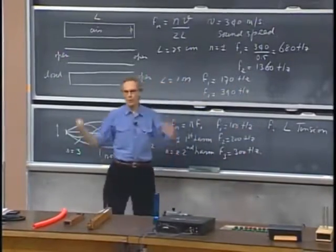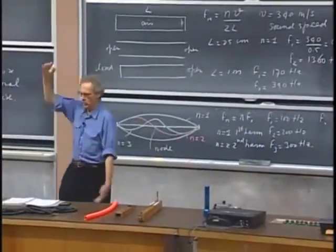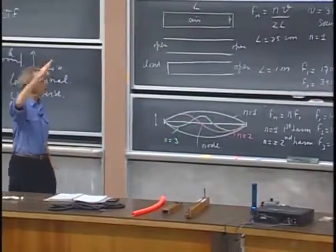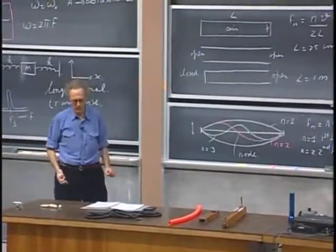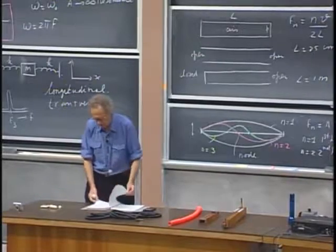So when you see an organ in a church, you see all these organ pipes, different lengths. The long ones have the very low tones, and the short ones have the very high tones, and that is the way that these instruments work.